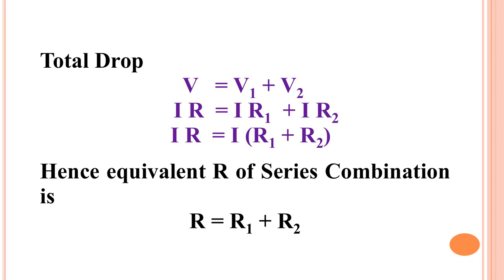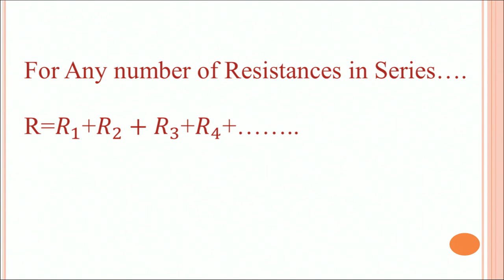Comparing the expression I×R with I×(R1 + R2), since they are equal, the equivalent resistance R of the series combination is R = R1 + R2. This extends to any number of resistances in series: the equivalent resistance is simply R1 + R2 + R3 + R4, and so on.